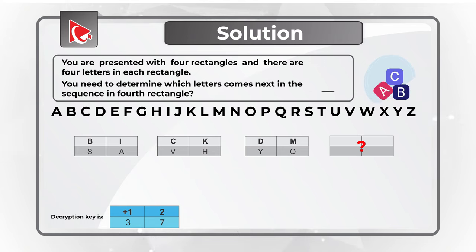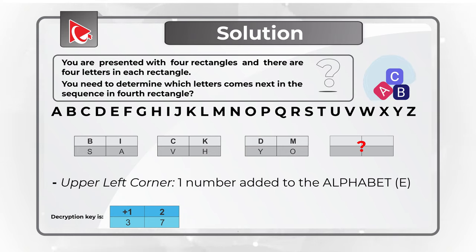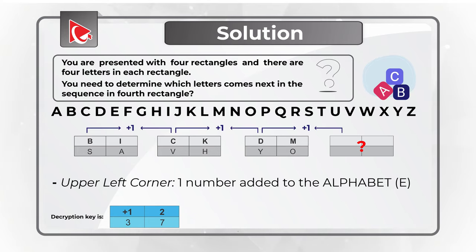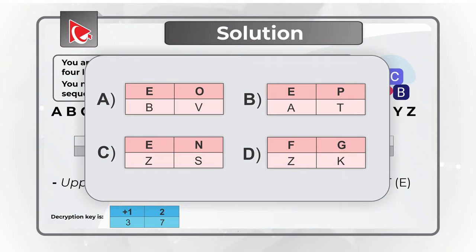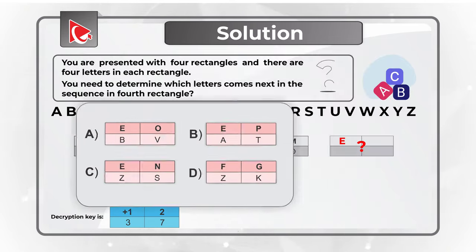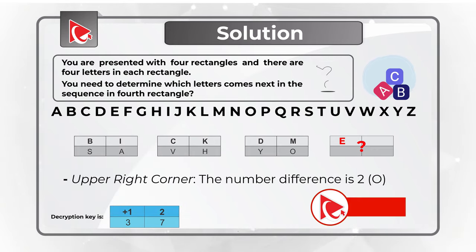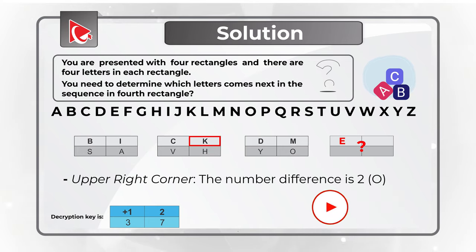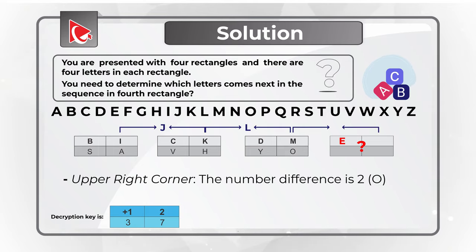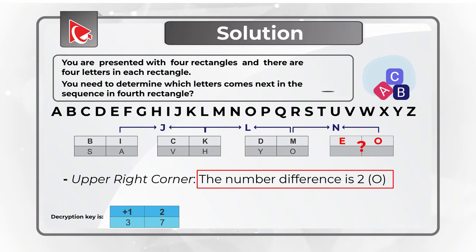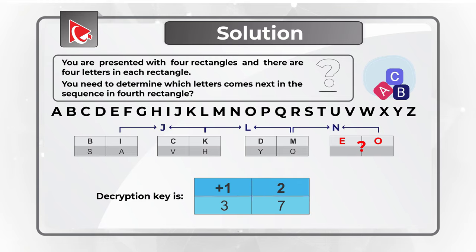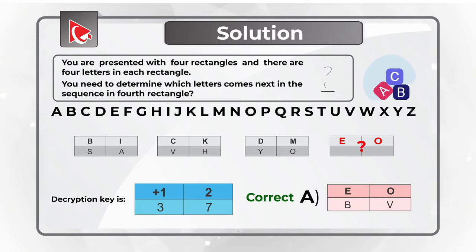Starting with the upper left corner: the existing sequence shows letters B, C, D — matching the English alphabet 1 to 1 — so the next letter would be E. Looking at the upper right corner, the letters in the sequence are I, K, and M. Since H, I, J (missing), K, L, M, O shows an increment of 2 — matching the second number in our decryption key — the next letter is O. Choices A, B, and C all have E in the upper left corner, but only choice A has both E and O in the upper row, so the correct answer is choice A.